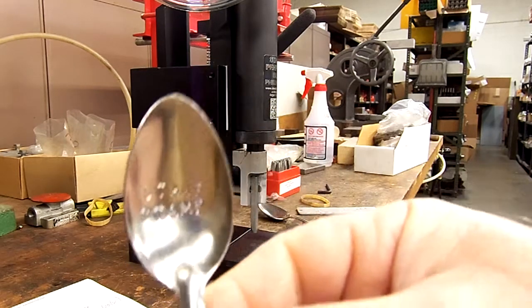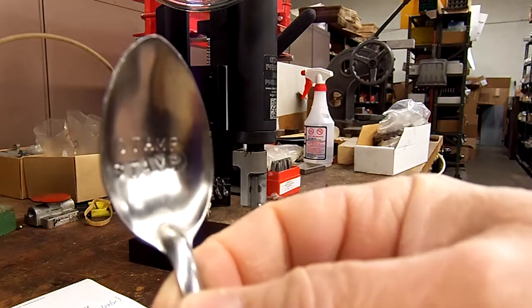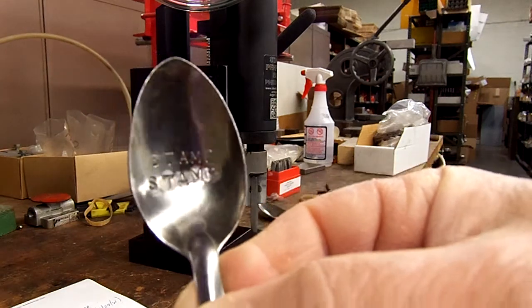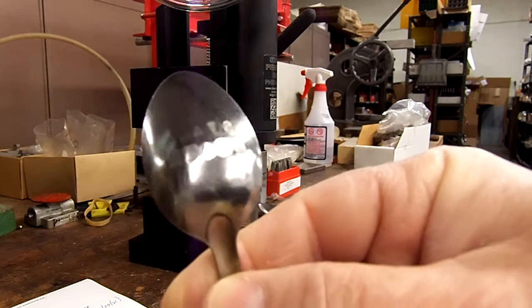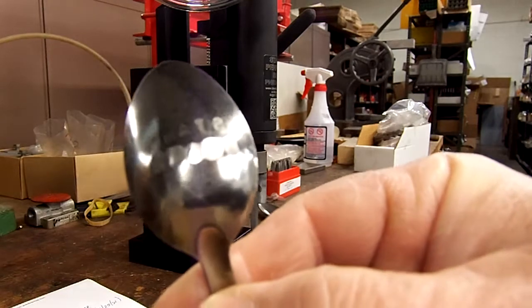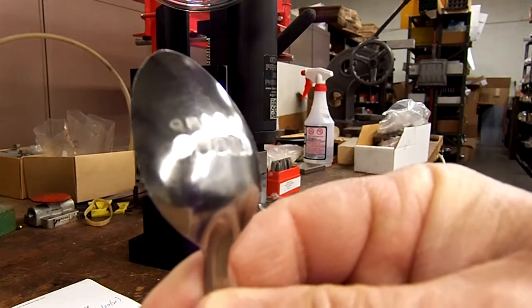And you can see underneath there. That's the difference in the two. You can really tell how deep it marks by the impression on the back of the spoon.